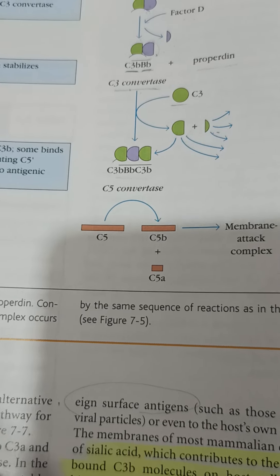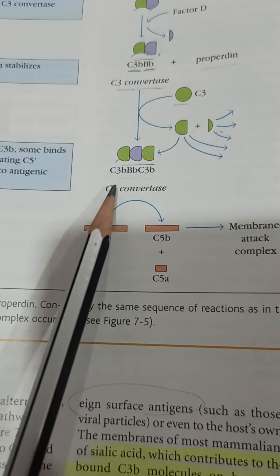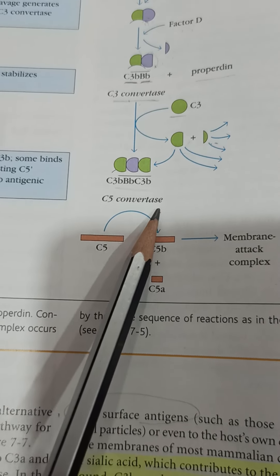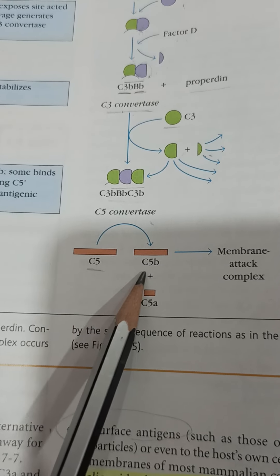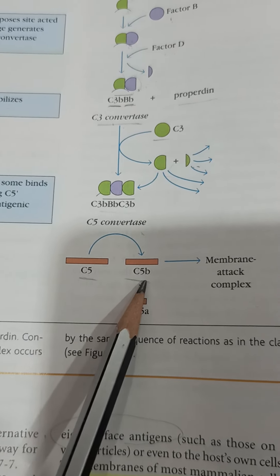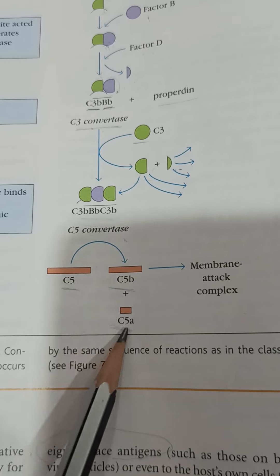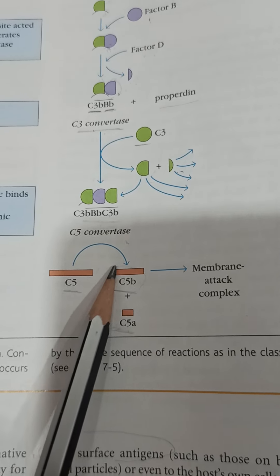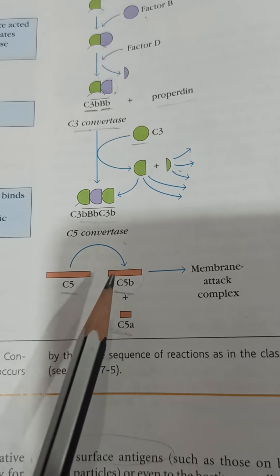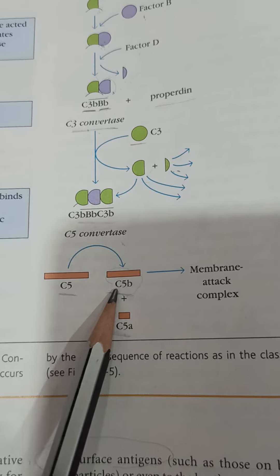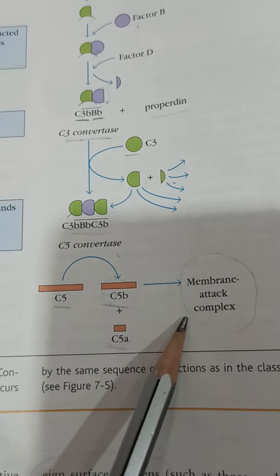This activates C5 convertase. C5 convertase further cleaves C5 into a larger component, C5b, and a smaller component, C5a. This larger component joins with other components like C6, C7, C8, and C9, and finally forms the membrane attack complex.